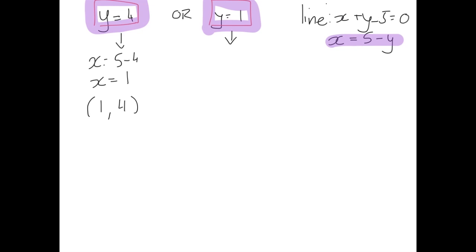Our other point, the other y value, gives x = 5 - 1, so x = 4. So our other point is (4, 1). Our points of intersection then are the point (1, 4) and the point (4, 1).